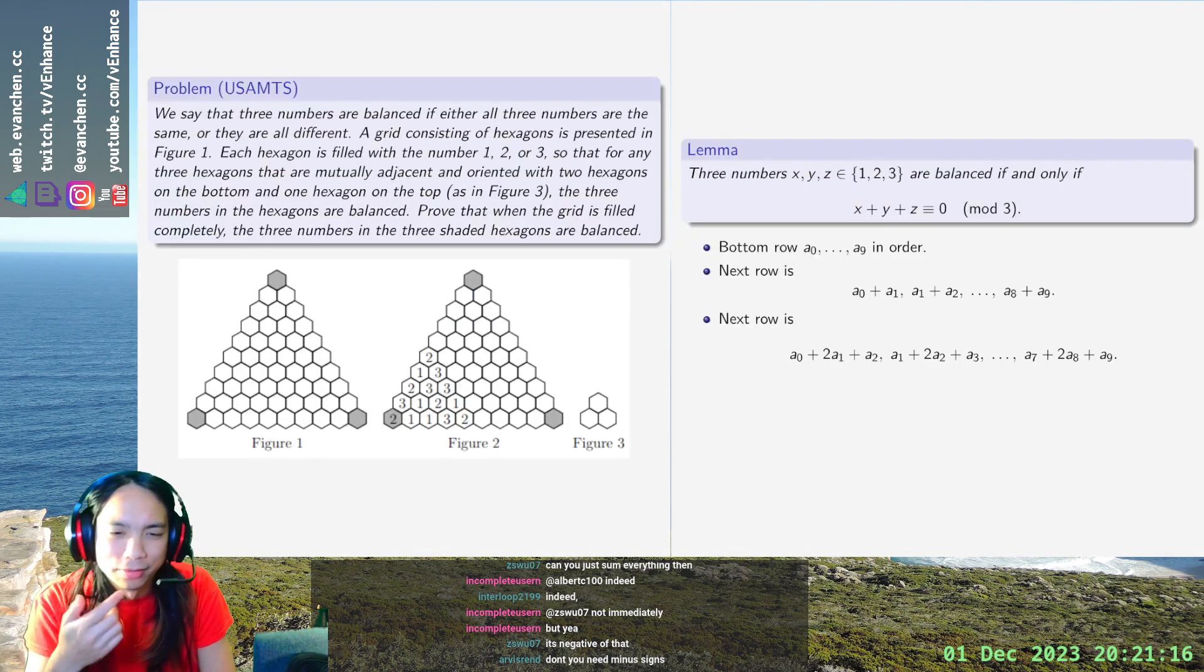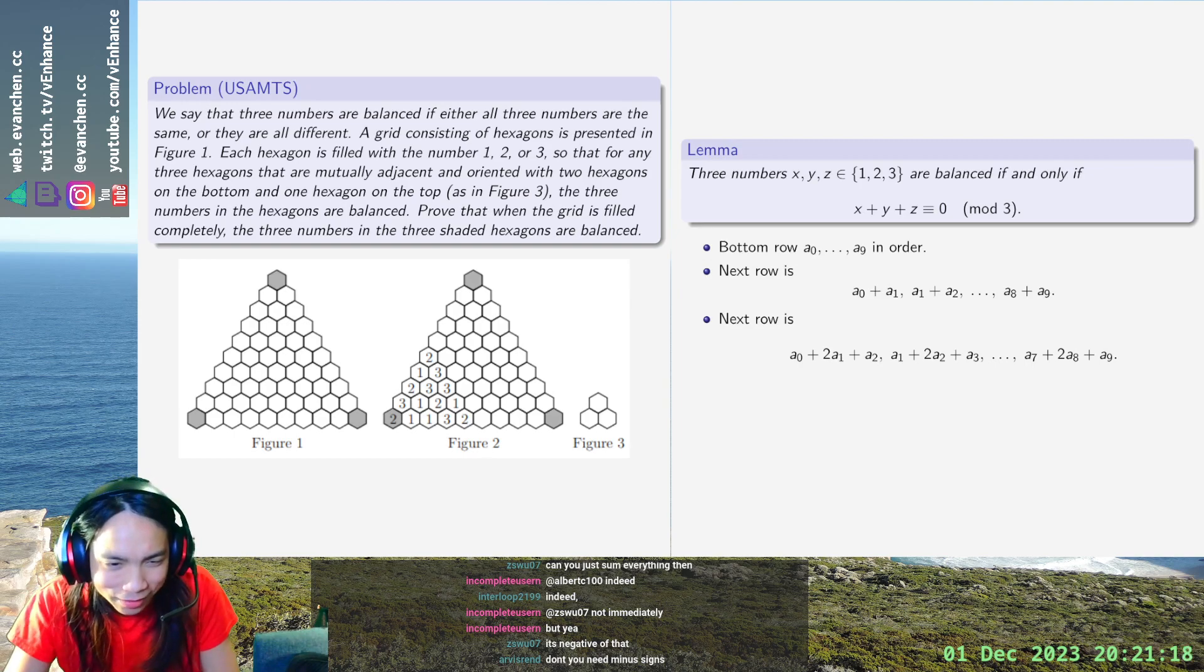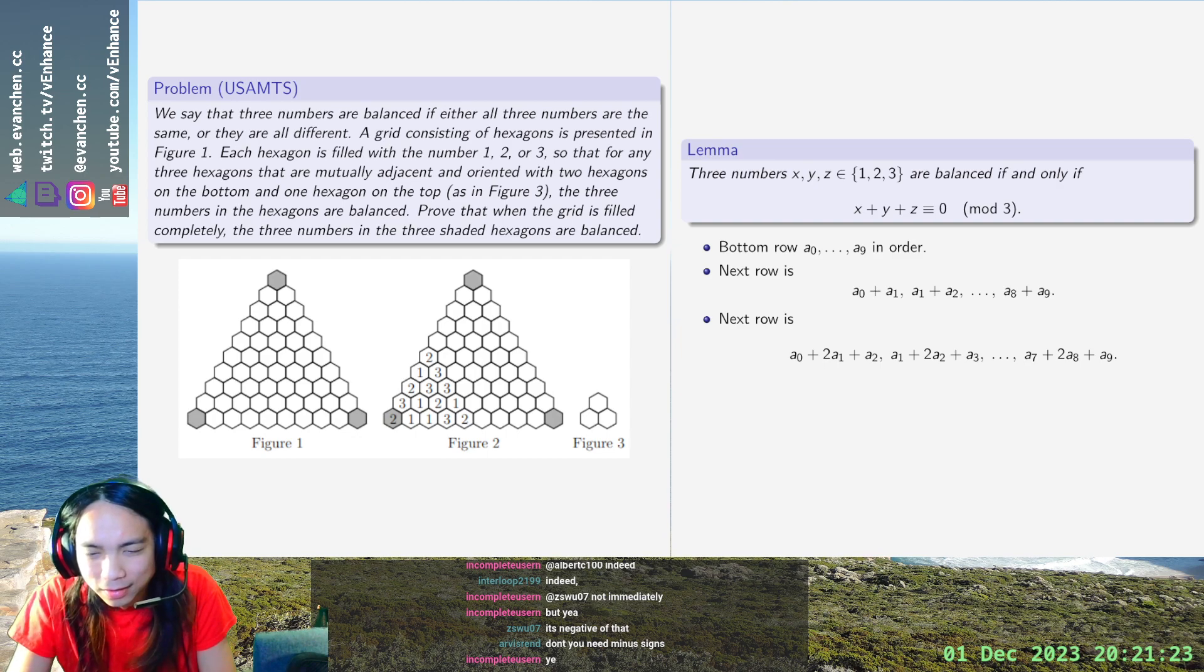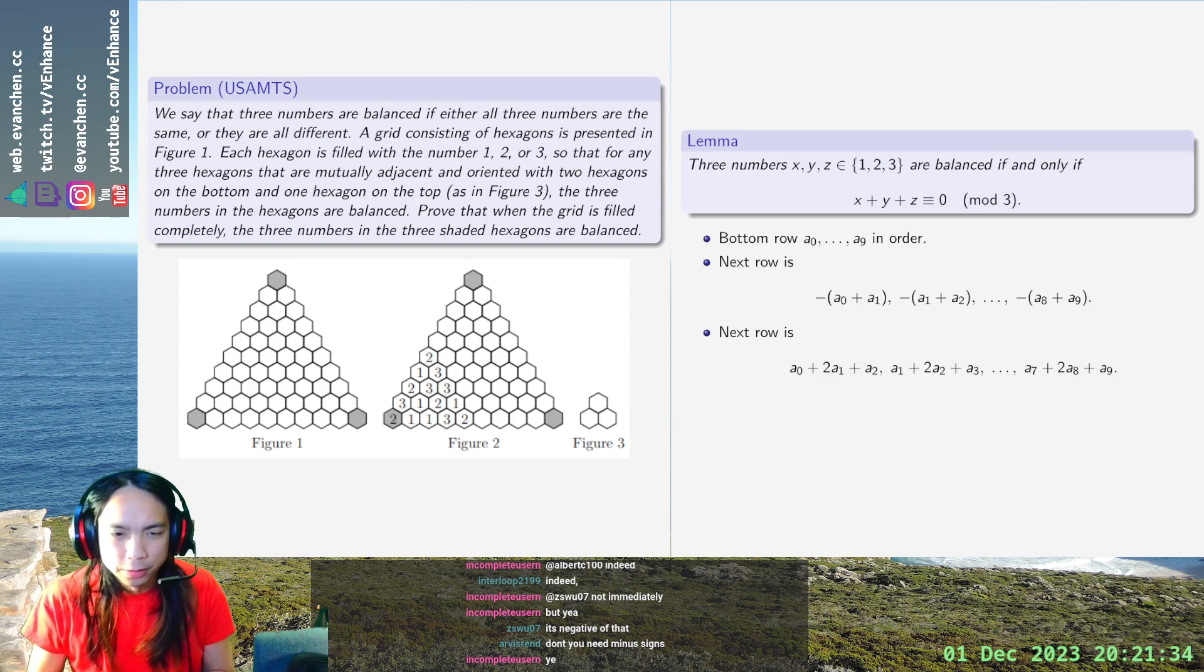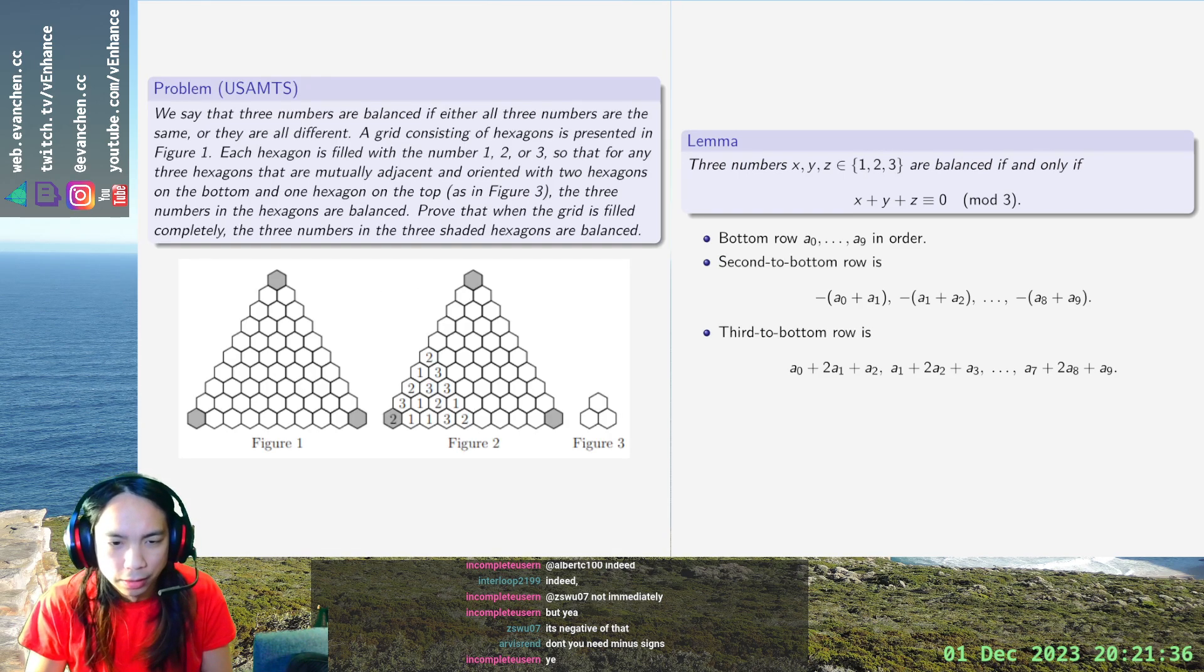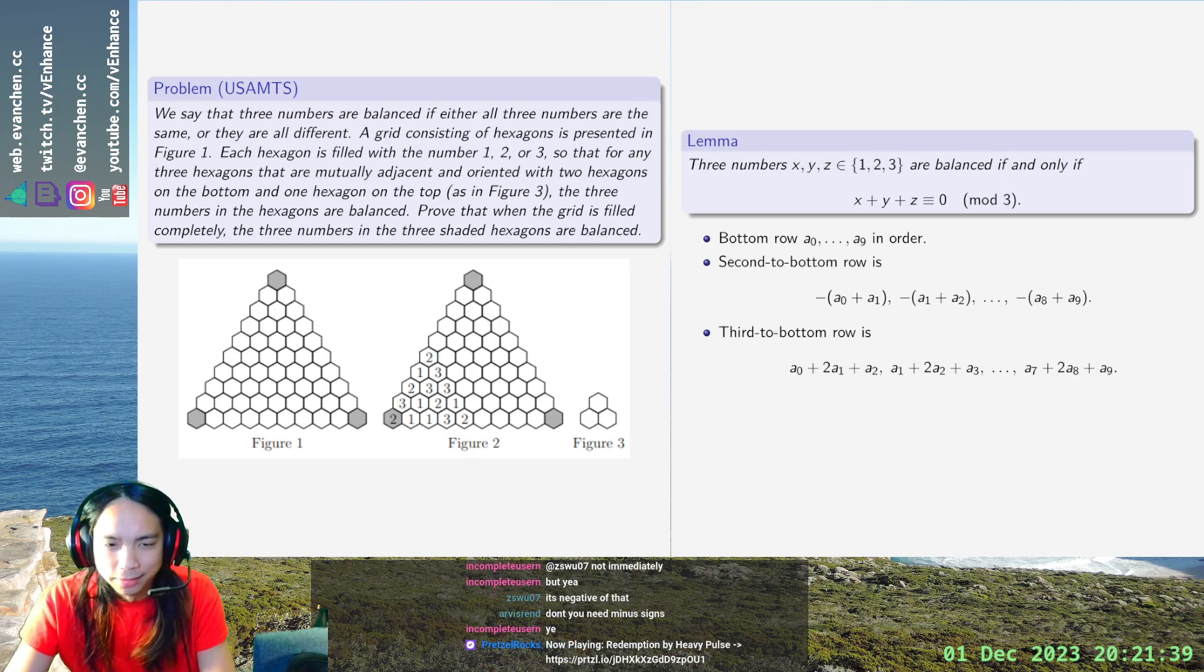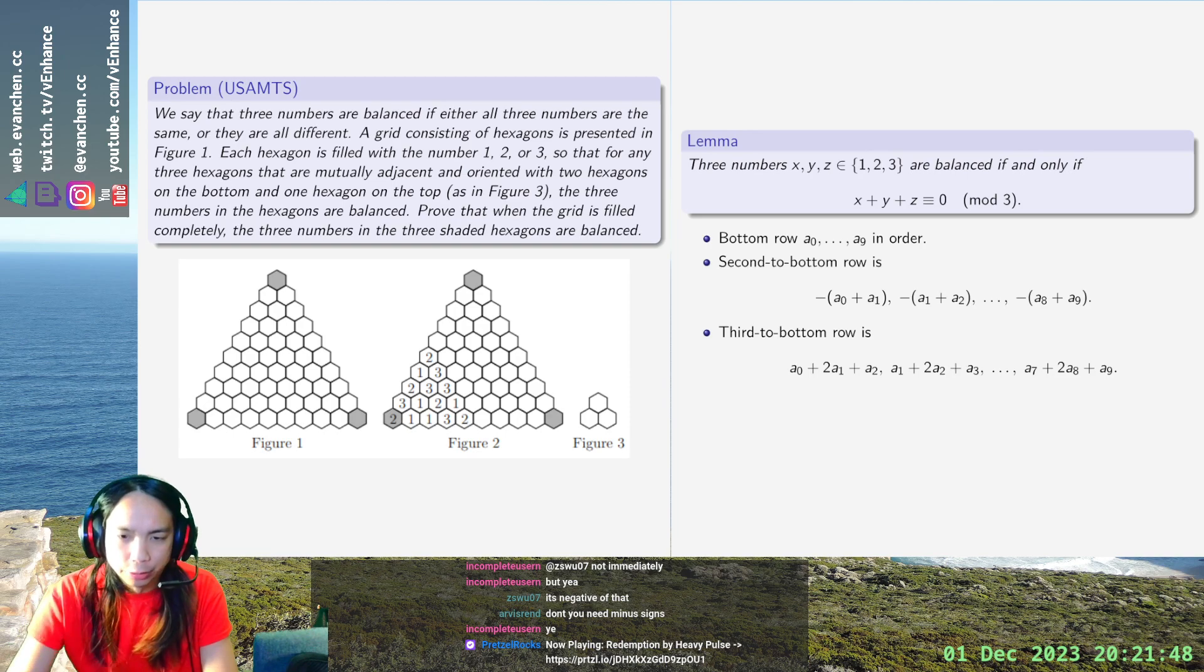Negative of that? Uh, crap, yes, sorry, yes, negative. And third to bottom row. Okay, so if you repeat this, eventually you'll get the 10th row is whatever, so the pattern continues with binomial coefficients. So, for example, if you do the next one, you would get 1, 3, 3, 1 as the coefficients.